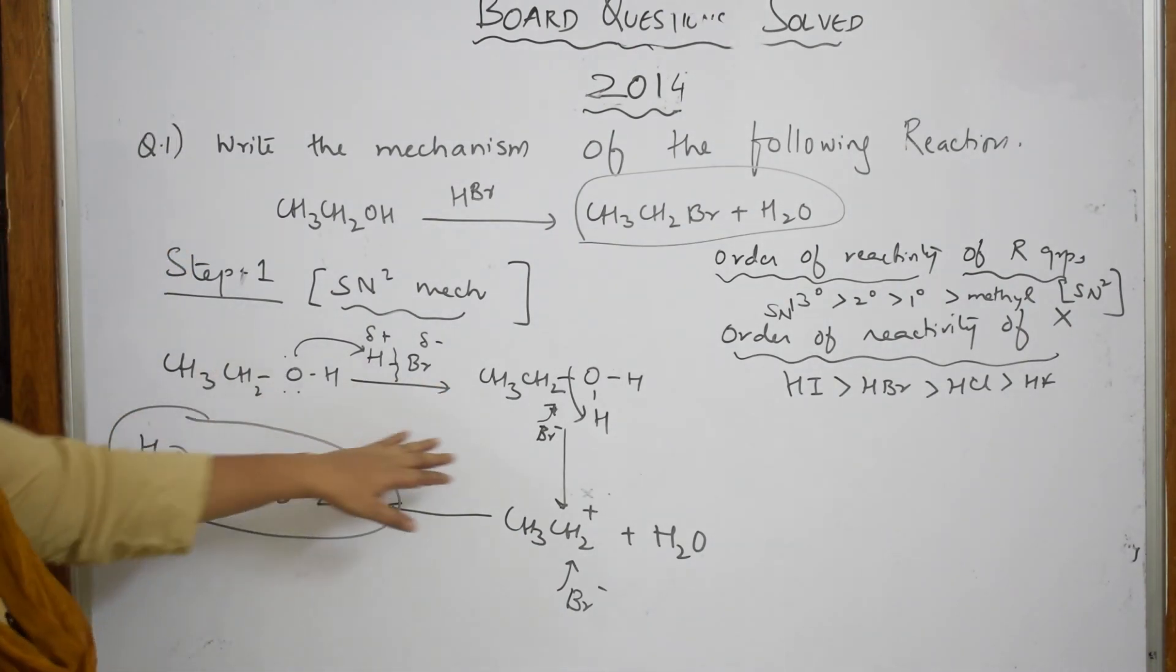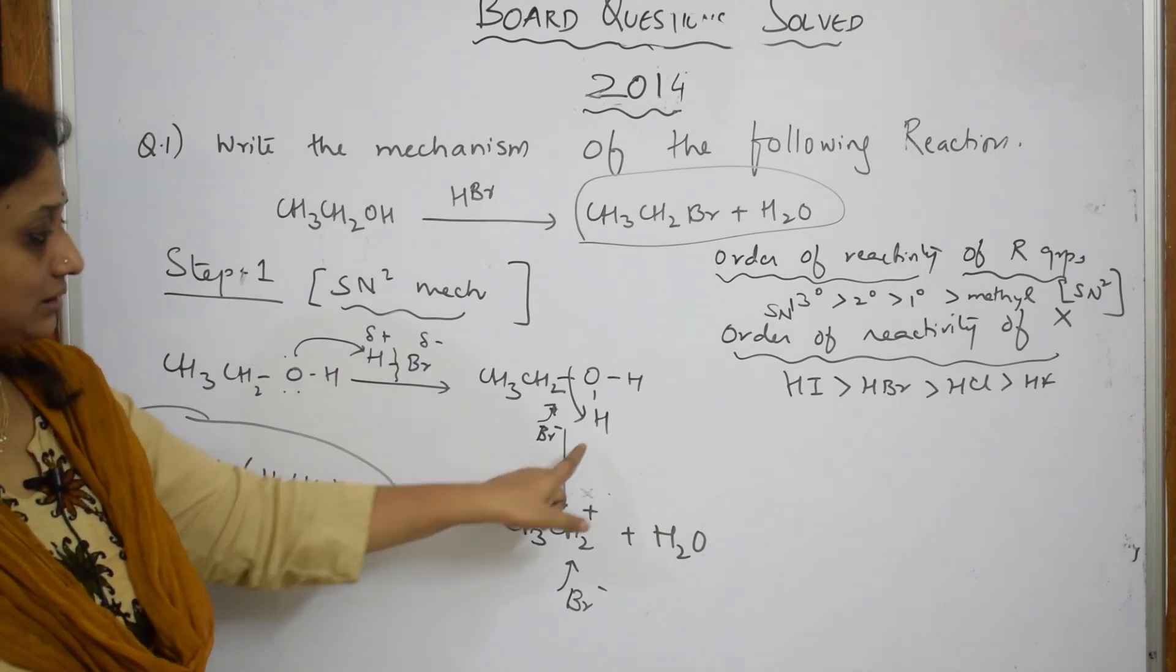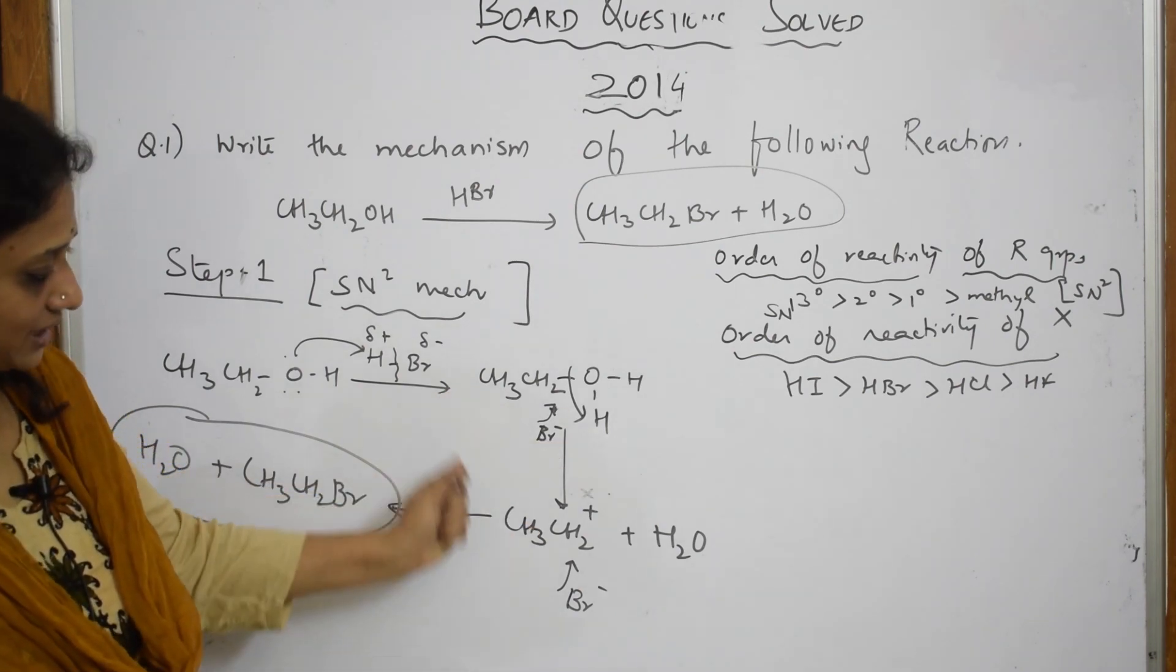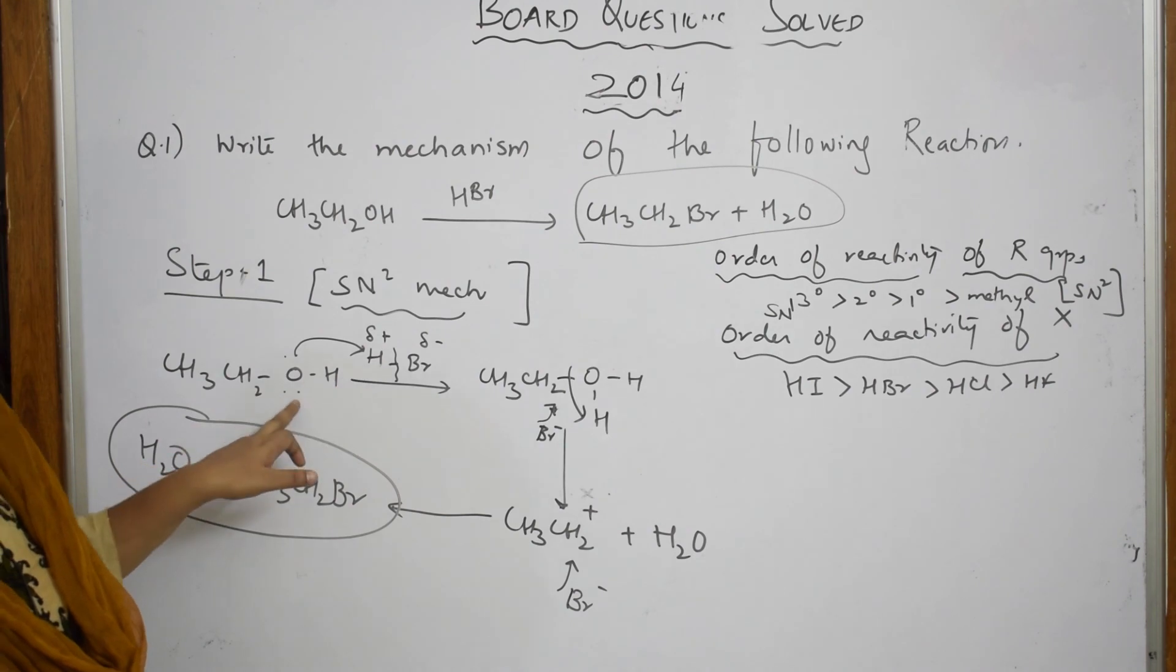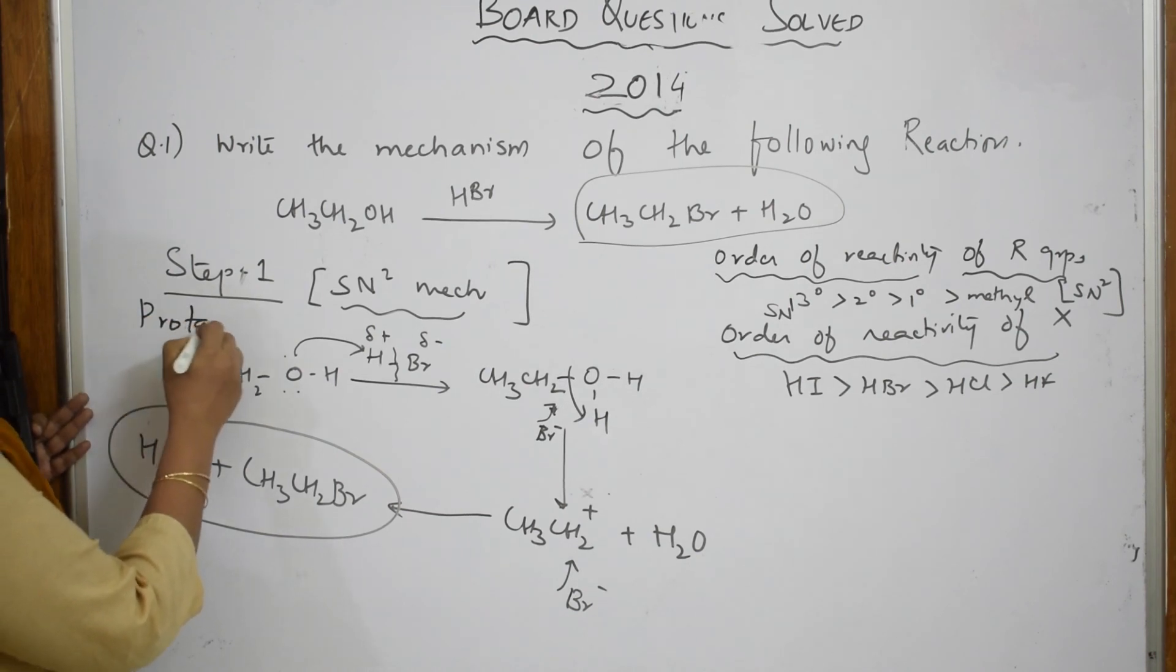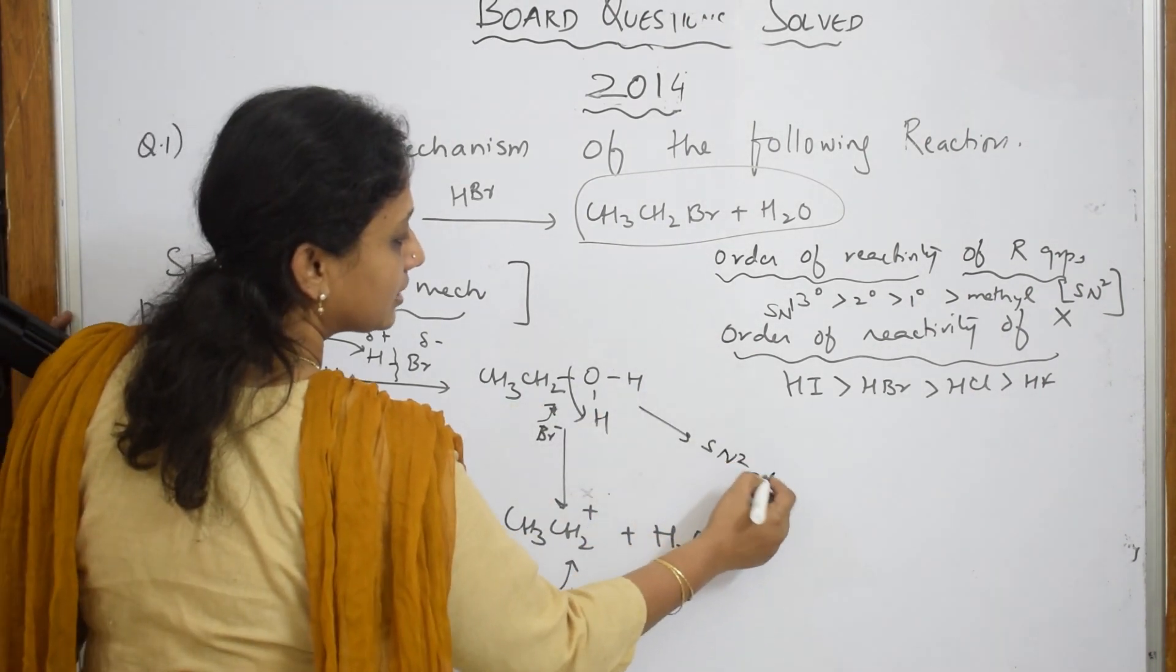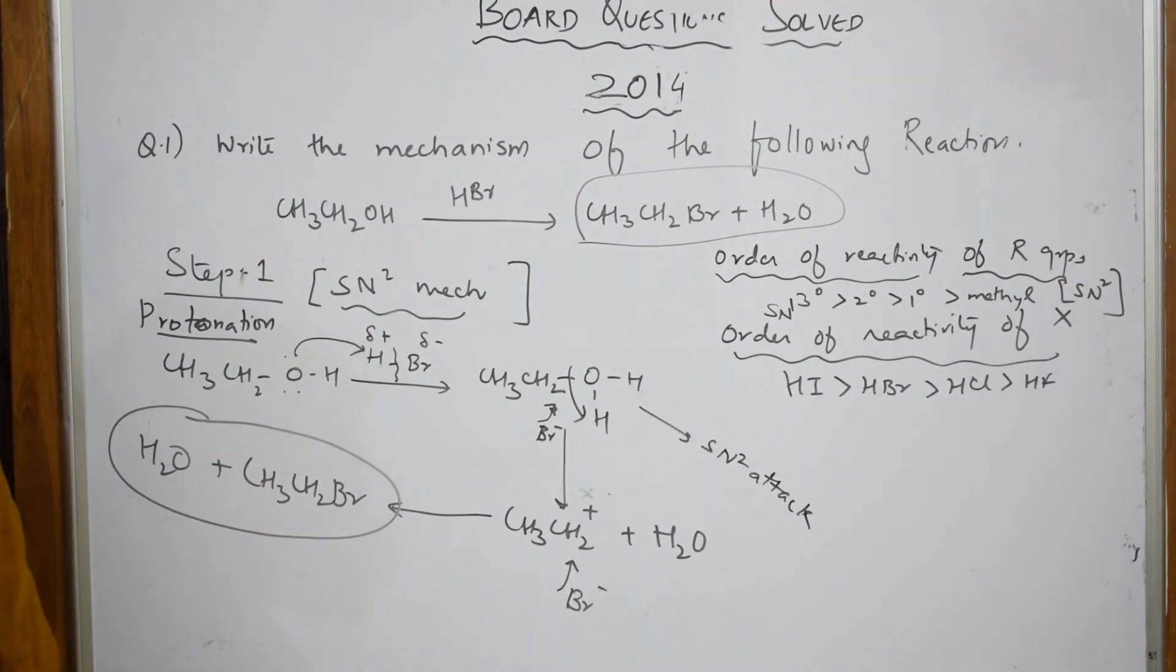Step one. Please be careful in the SN2 mechanism. Both the incoming group and the leaving group should be shown at the same time. I have shown it at the same time but here to make it clear, I have just written it down. First, attack of the proton, protonation. Then, SN2 attack and this is your final product. Thank you for watching.